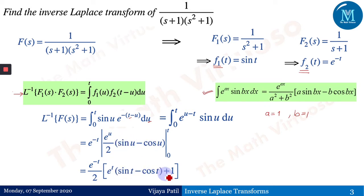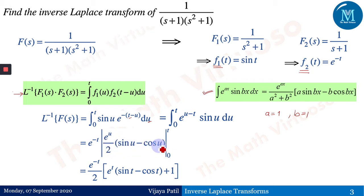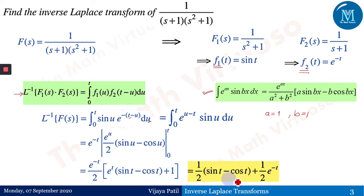At the upper limit: e^t(sin(t) − cos(t)). At the lower limit: sin(0) = 0, e^0 = 1, and −cos(0) = −1, so that term gives −(−1)/2 = +1/2. Combining and multiplying by e^(−t)/2 gives the final answer: (e^(−t)/2)·[e^t(sin(t)−cos(t)) + 1].